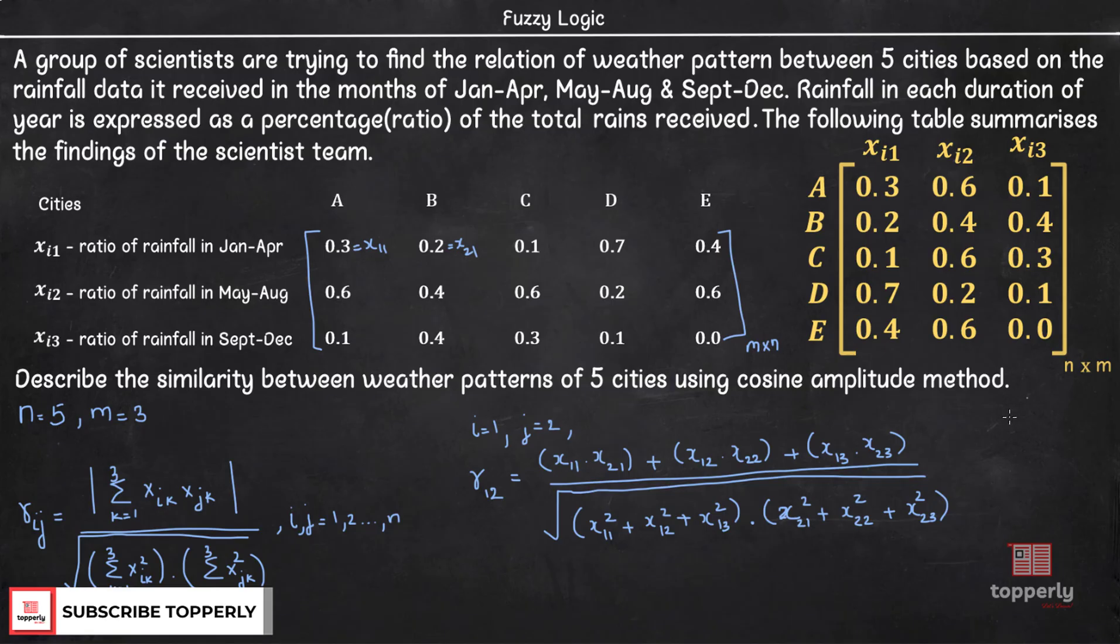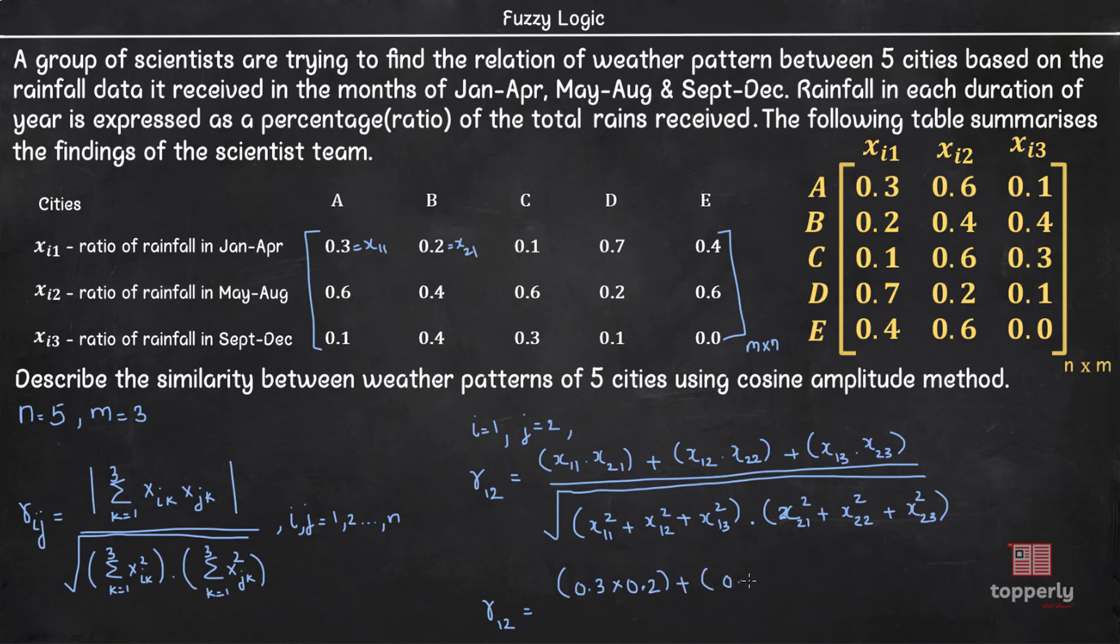Now we can easily calculate Rij. R12 equals x11 which is 0.3 times x21 which is 0.2 plus x12 which is 0.6 times x22 which is 0.4 plus x13 which is 0.1 times x23 which is 0.4, the whole by square root of (x11 square which is 0.3 square plus x12 square plus x13 square) times (x21 square plus x22 square plus x23 square) and the final value after computation is 0.836.